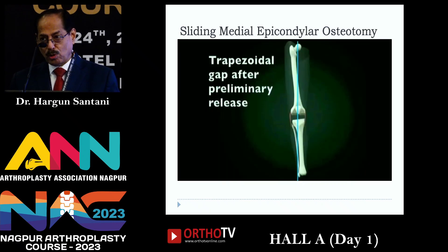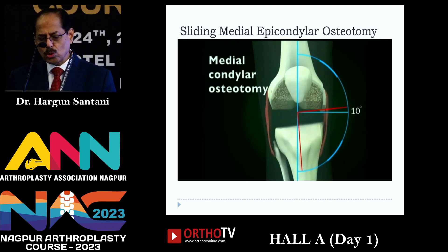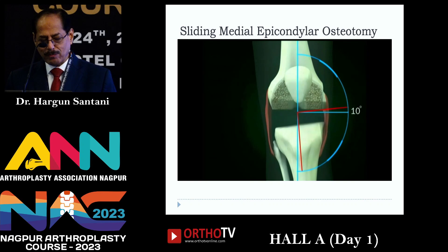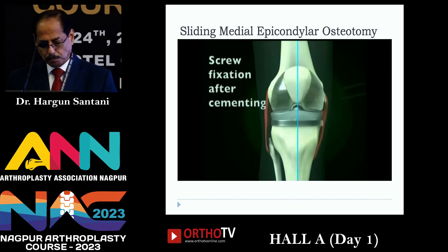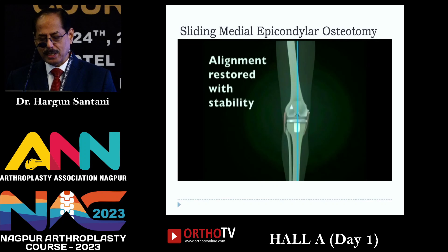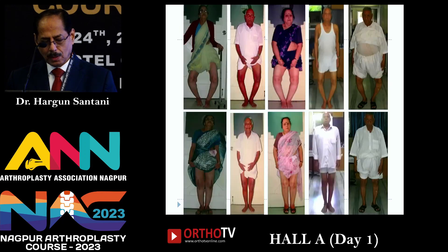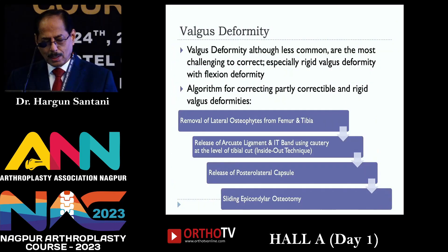If you are not able to correct with this, the next step — medial reduction osteotomy — is usually required in bow-leg femur where you are trying to correct intra-articularly. You then fix it after cementing the components. These are pre-op and post-op examples.